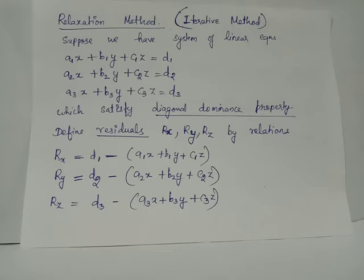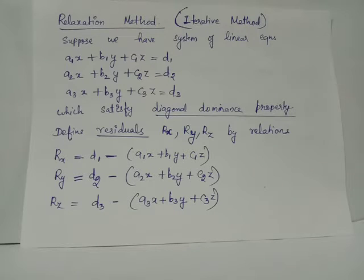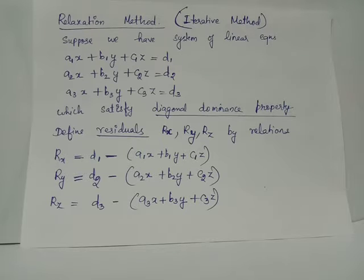When delta x equals 1 and y and z are zero, we get ry equals d2 minus a2 and rz equals d3 minus a3. Initially, when x, y, and z are all zero, rx equals d1, ry equals d2, and rz equals d3. So when delta x equals 1, rx is decremented by a1, ry by a2, and rz by a3.